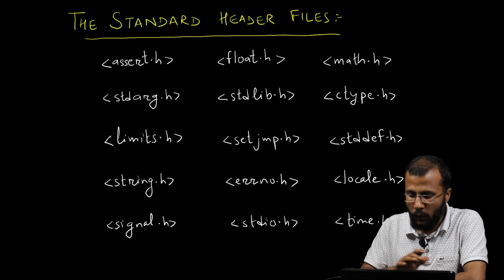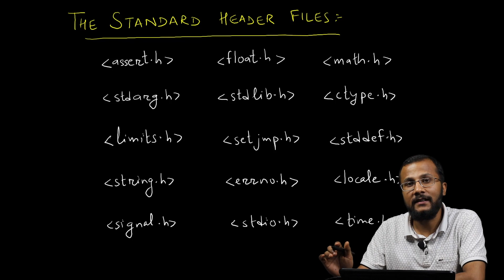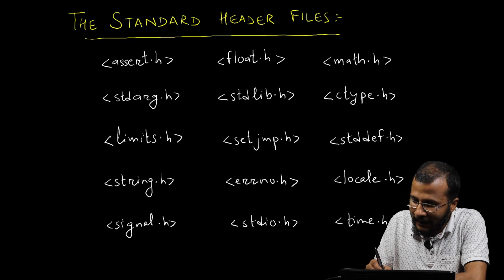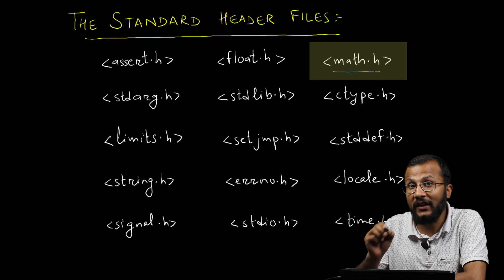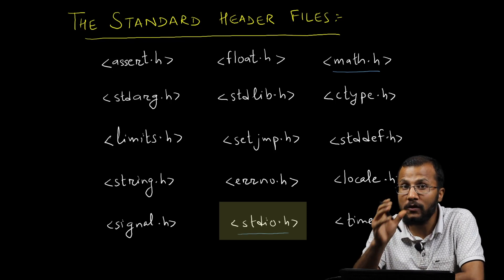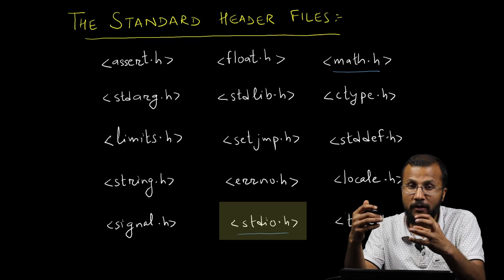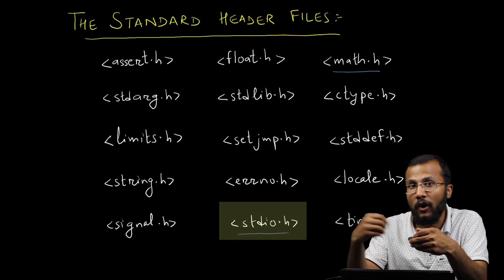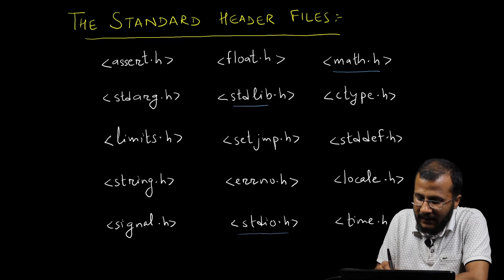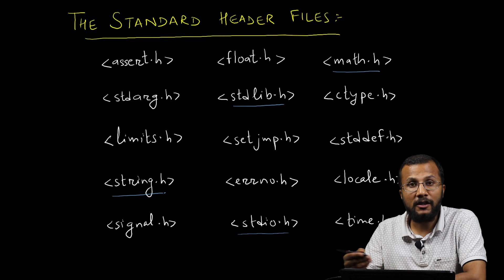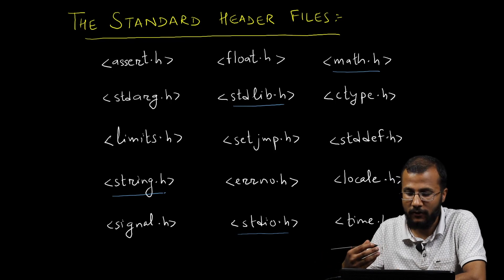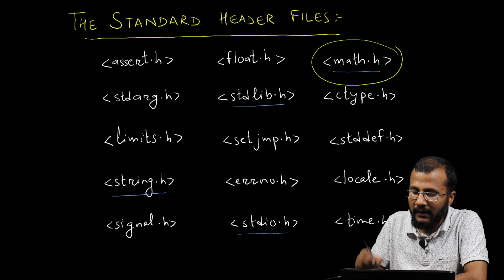There are many standard header files available as displayed here. You are not going to use all of these unless you are working on a very specific task. Some of the header files you are going to use very frequently are math.h, which has definitions of different mathematical functions; stdio.h, which consists of functions for input like scanf and output like printf; stdlib.h; and string.h. If we use any other header files, we'll discuss them in the relevant lecture.